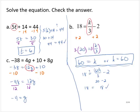Let's check that work. Is negative 38 equal to 4 times negative 4 plus 10 plus 8 times negative 4? Following the order of operations on the right hand side, I have negative 16 plus 10 plus negative 32.